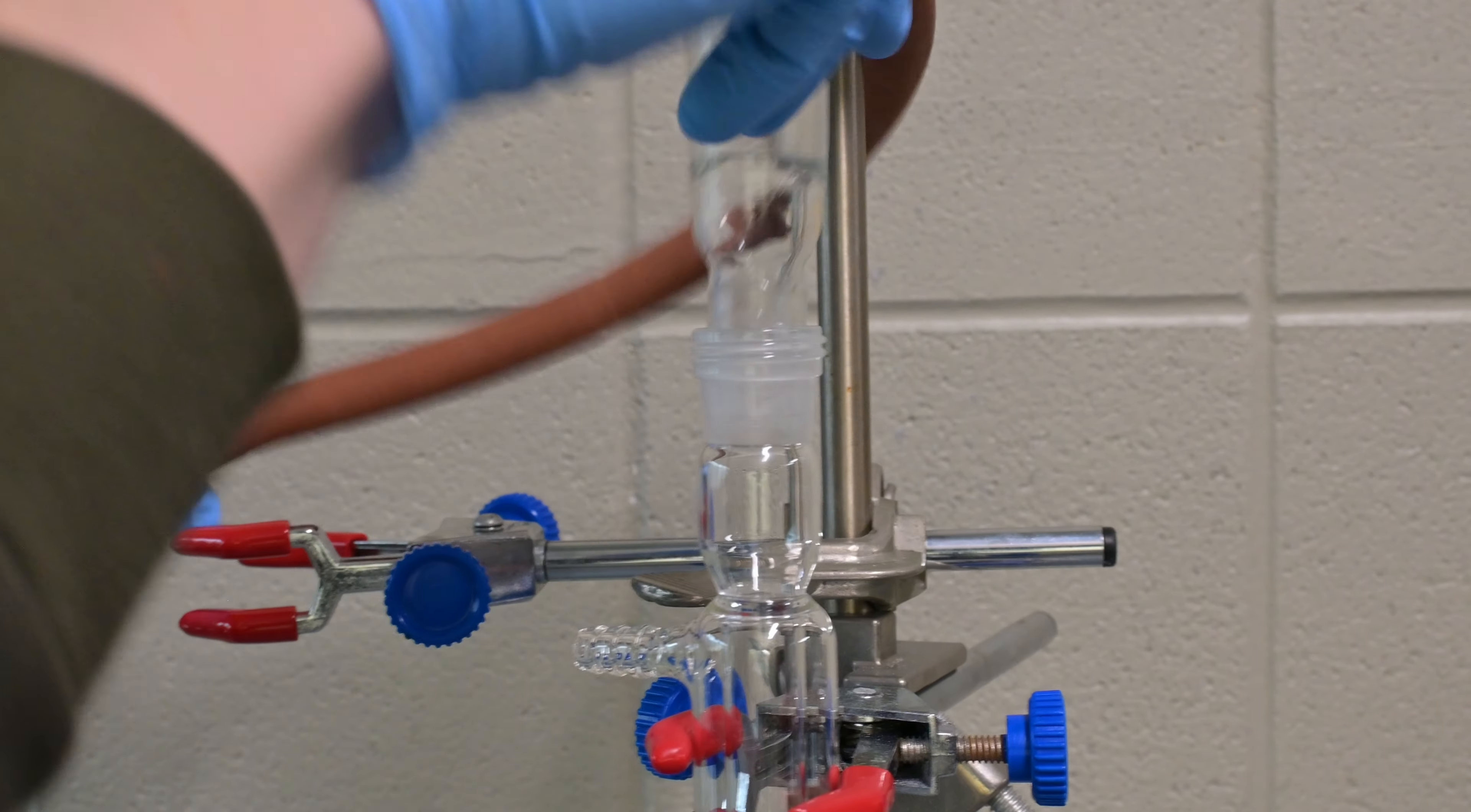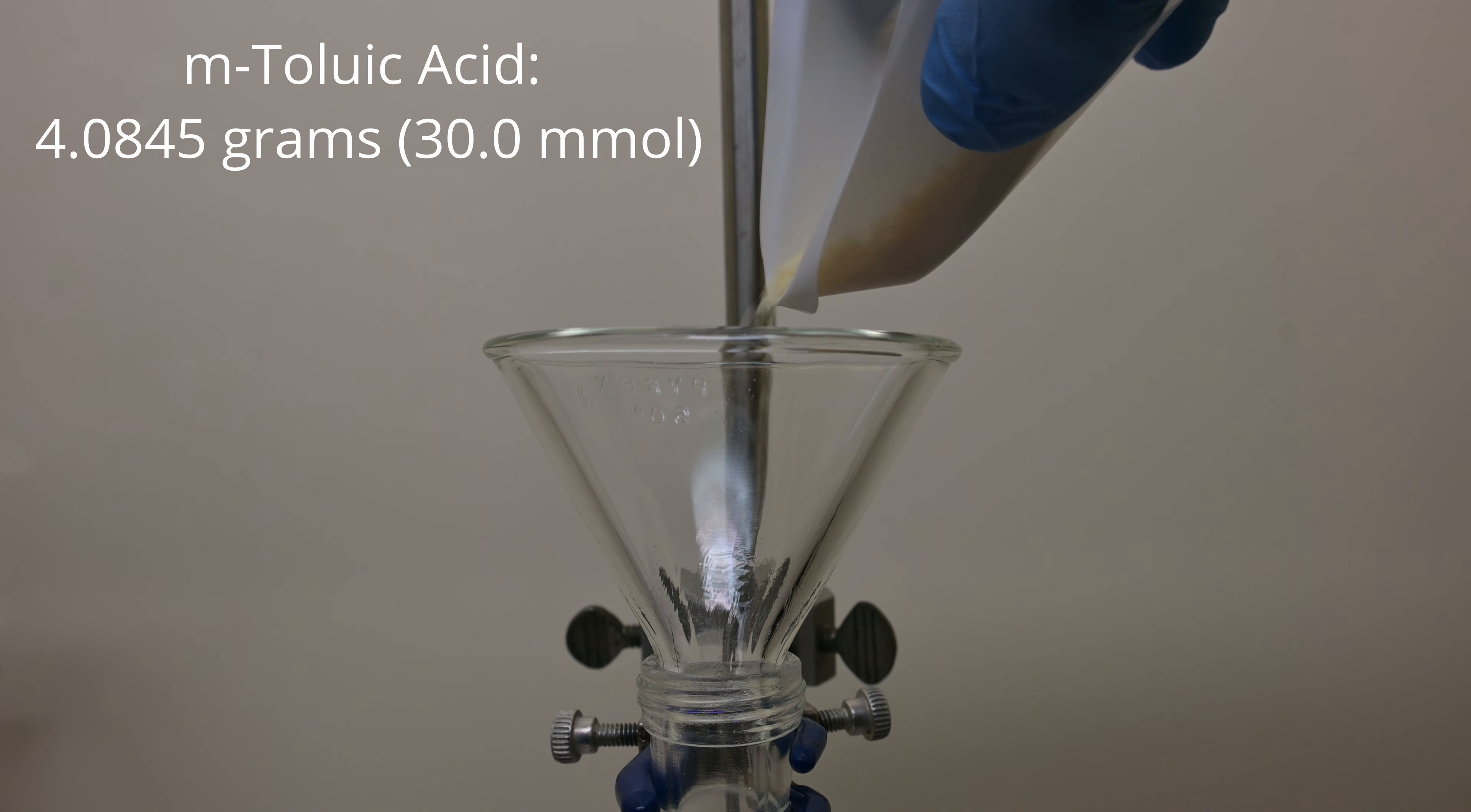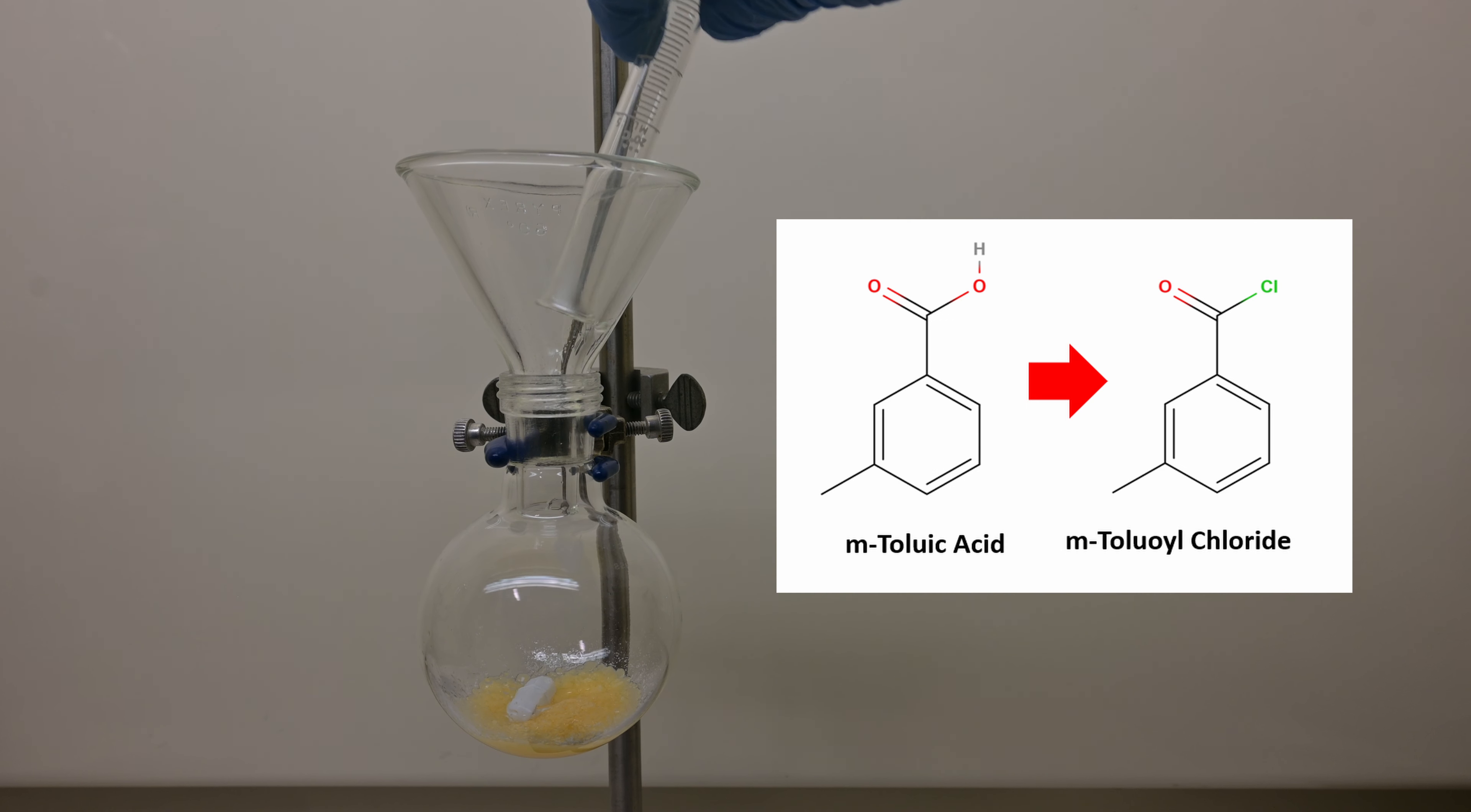If you cannot perform this experiment under a fume hood, equip the reflux condenser with a gas trap containing dilute sodium hydroxide. Detach the reaction flask and measure 4.08 grams, 30 millimoles of M-toluic acid into it. Then drop in a stir bar or boiling chips to ensure even mixing during heating and to keep any bumping from occurring. Next, add 2.6 milliliters, about 36 millimoles of thionyl chloride, a chlorinating agent that will convert the M-toluic acid into M-toluoyl chloride.